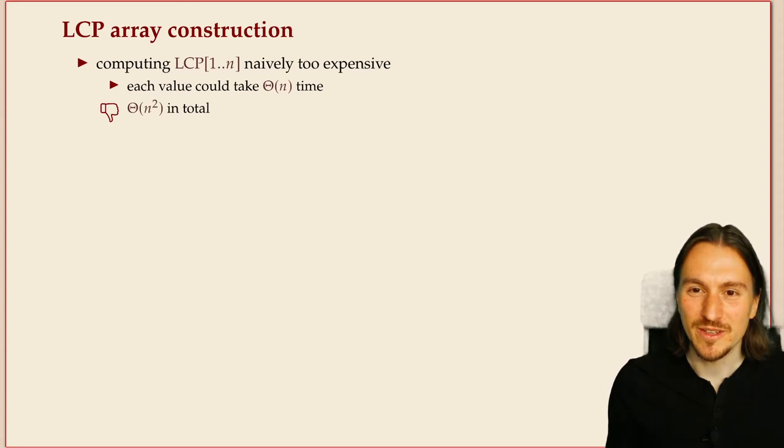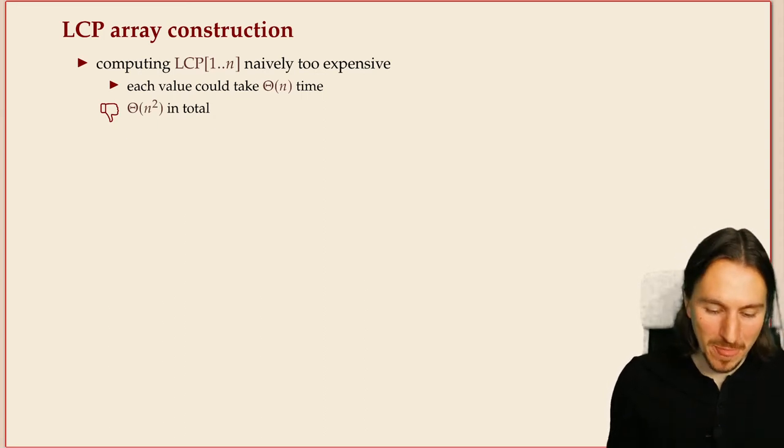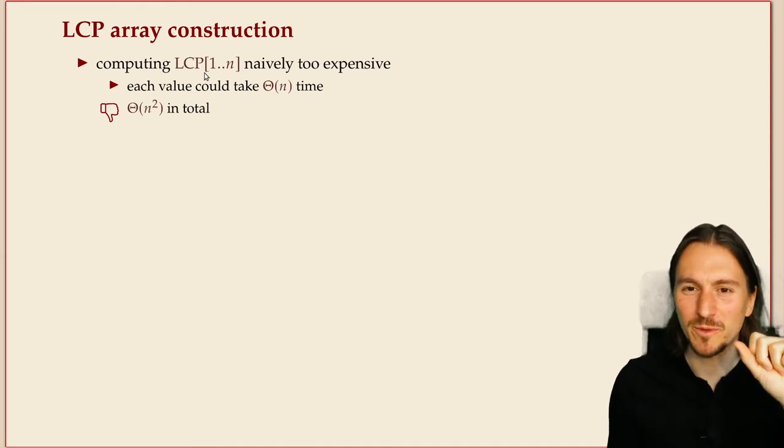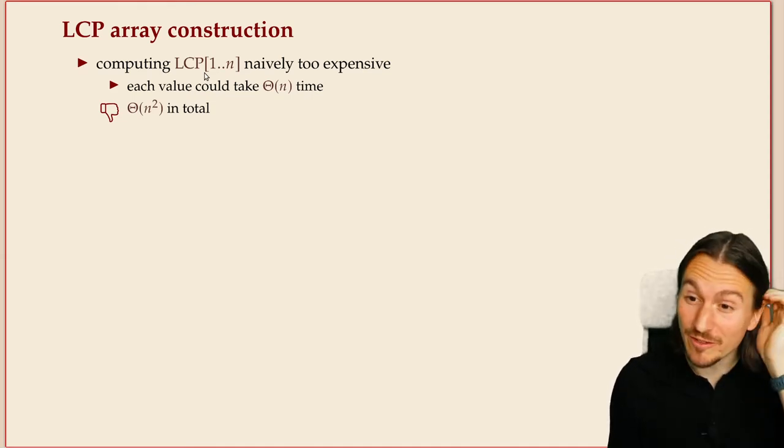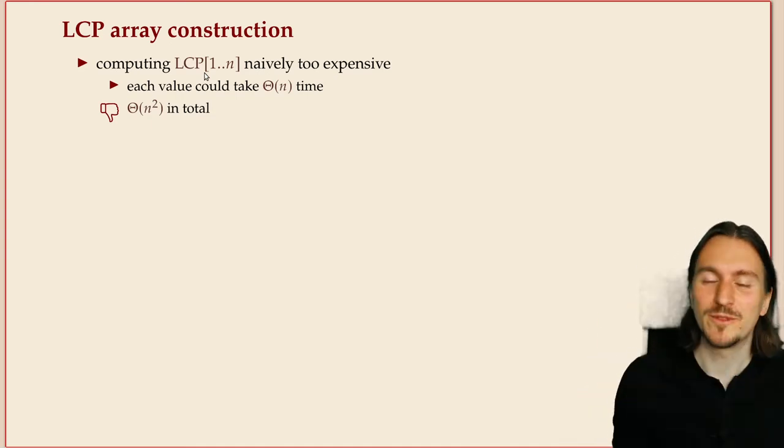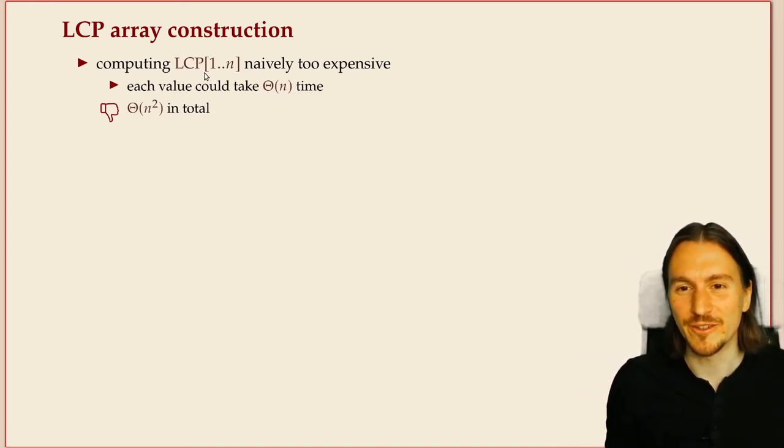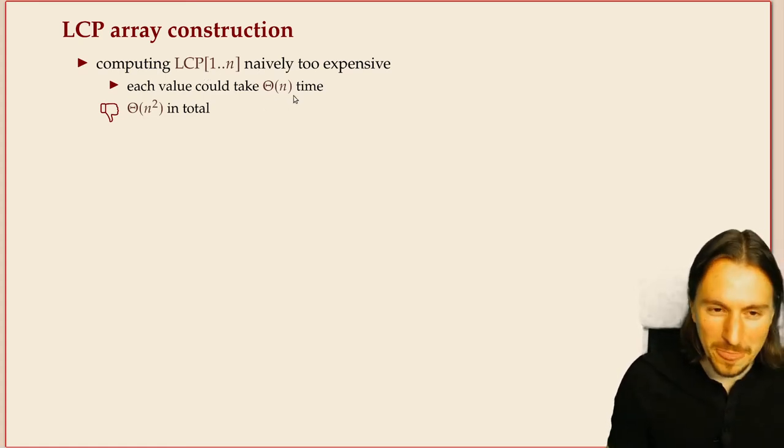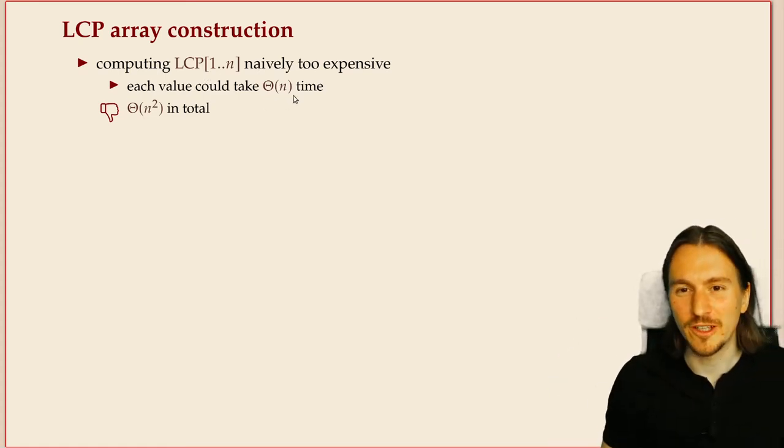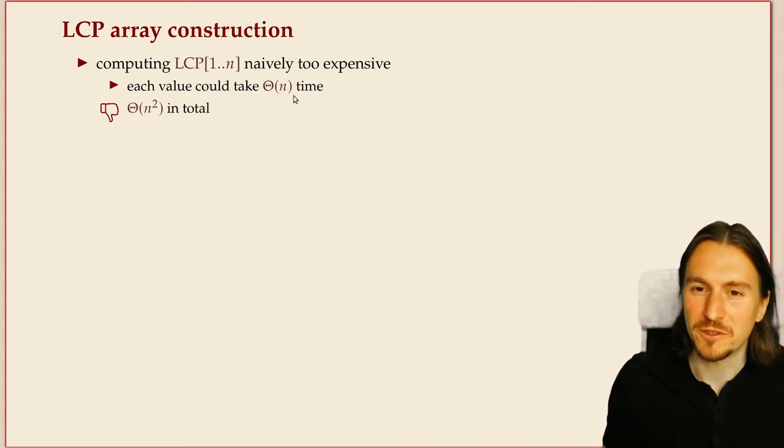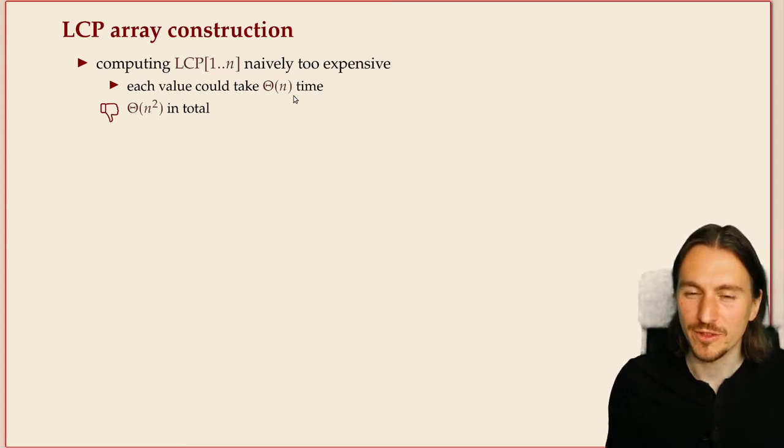As always, first think about the naive and simple way to do it. It's longest common prefixes, so you can always compute this step by step, each pair individually, but just looking at the two suffixes and comparing them left to right, how many characters match. But obviously that can go for a long while if they share a long common prefix, so the overall time could be quadratic and that's way too slow for anything interesting.